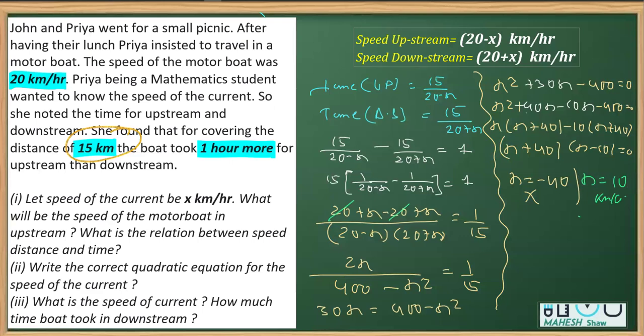We can write the speed of the current. Now we have to find the speed of the stream we got as 10 km per hour. Now let's figure out what the questions that we have to find out. In the first case, we have to find what will be the speed of the motor boat in upstream. So that means you have to find the speed of the motor boat. So it's going to be 20 minus x and we have got x as 10. So 20 minus 10 that is equal to 10 is the answer for this first part.